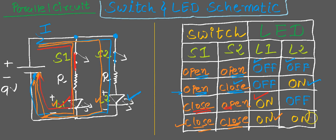An important thing to notice is that the brightness of the LED is dependent on the value of resistance. If resistance R1 is higher and R2 is less, then LED 2 would be brighter and LED 1 less bright, and vice versa. If both resistance values are the same, both LEDs would glow the same. That's important to understand.